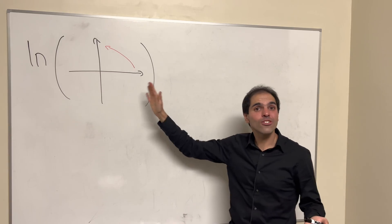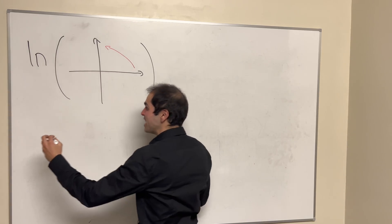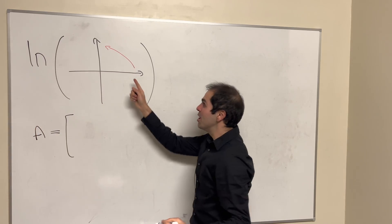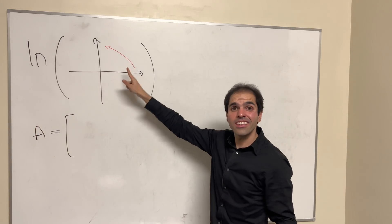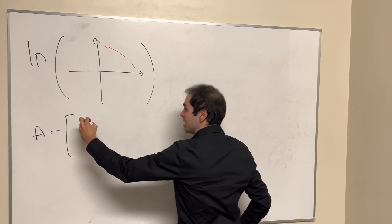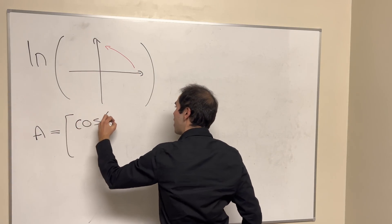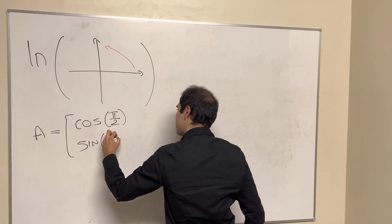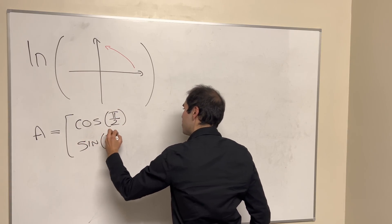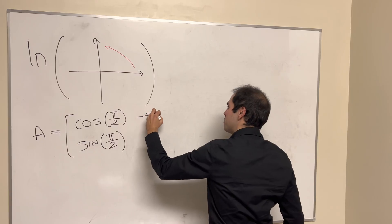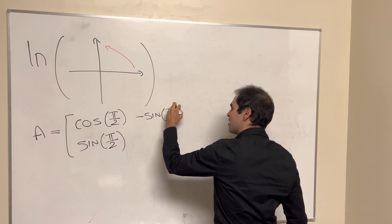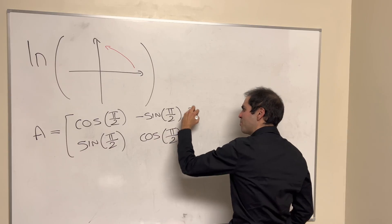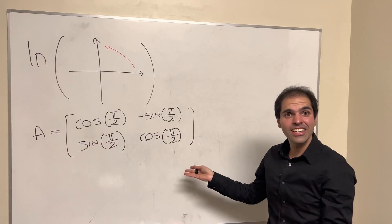Here is where matrices help us, because matrices encode geometric transformations quite nicely. More precisely, rotation by 90 degrees is just given by cosine(π/2), sine(π/2), minus sine(π/2), and then cosine(π/2), which is part of another video I've done.